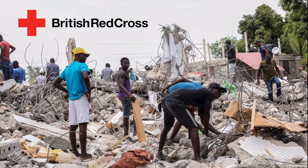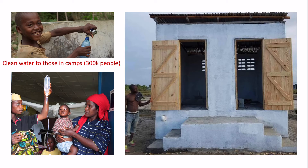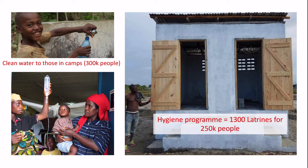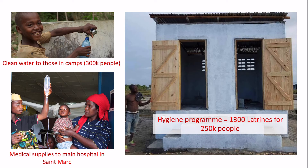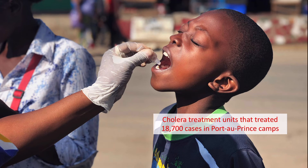The British Red Cross took several key actions to mitigate the disease. They provided clean water and sanitation to people in the camps around Port-au-Prince, supporting 300,000 people. They built a hygiene programme including 1,300 latrines serving 250,000 people, and provided medical supplies to individuals and to the main hospital in St. Marc. They also provided cholera oral vaccinations, particularly in the camps, with nearly 20,000 cases treated at the time.